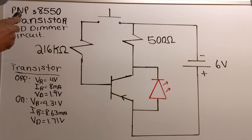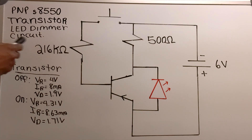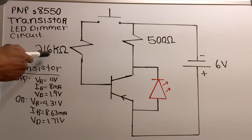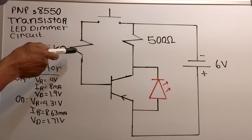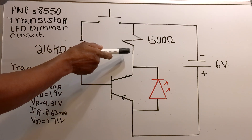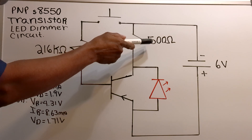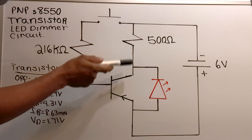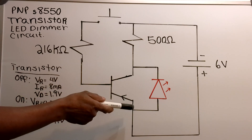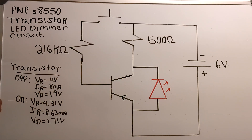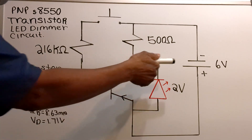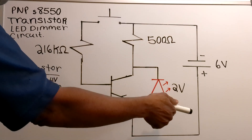In this video I've got the PNPS8550 transistor LED dimmer circuit. On the base of the transistor I've got a 216k ohm resistor. On the collector I've got a 500 ohm resistor. I've got a switch across the base and a red 2 volt LED across CE. And I've got a 6 volt source across the entire transistor.